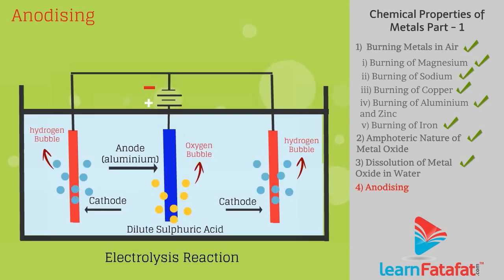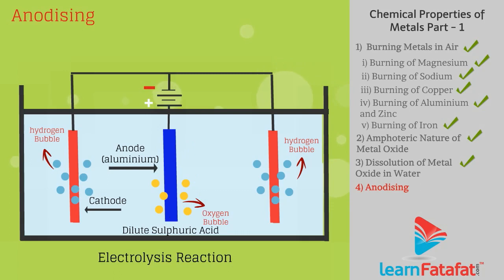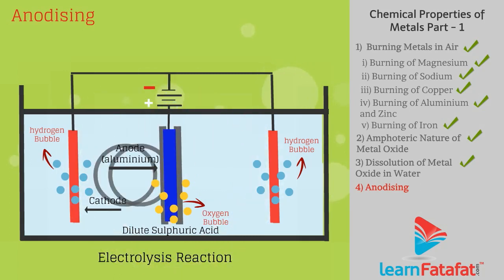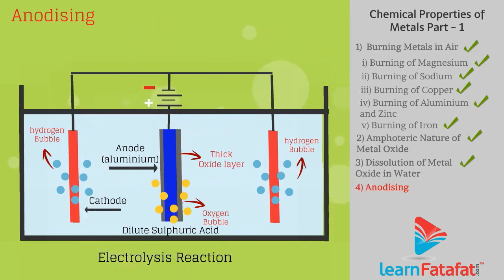Hydrogen gas evolves at the cathode and oxygen gas evolves at the anode. At the anode, the oxygen gas reacts with aluminum and makes a thick oxide layer. This process is called anodizing.